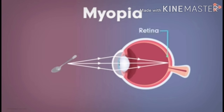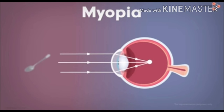See the next picture. In this picture, the light rays are coming from infinity, from the far point. After entering the lens, it is converging before the retina — that is, in front of the retina. So a blurred image will be formed on the retina.